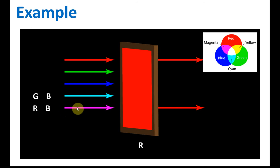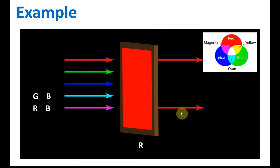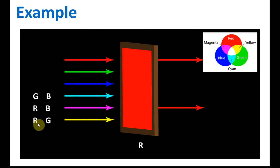The color that moves into the filter is magenta, but the light that comes out is red, because the blue color is blocked and only the red color is allowed to pass through. What about yellow? Yellow is a combination of red and green. The green color will be blocked and only the red color will be allowed to pass through, so the light that comes out is red.